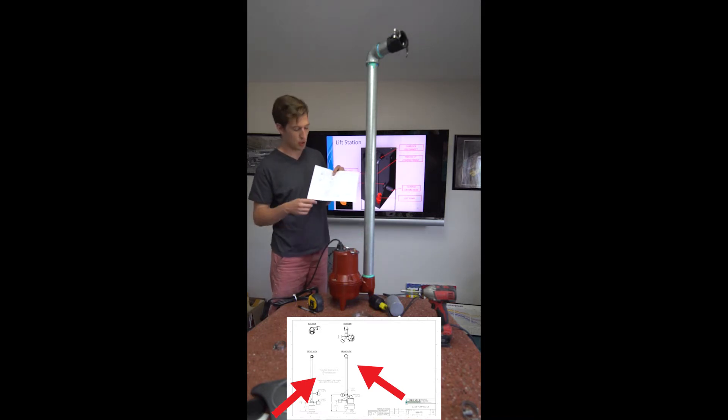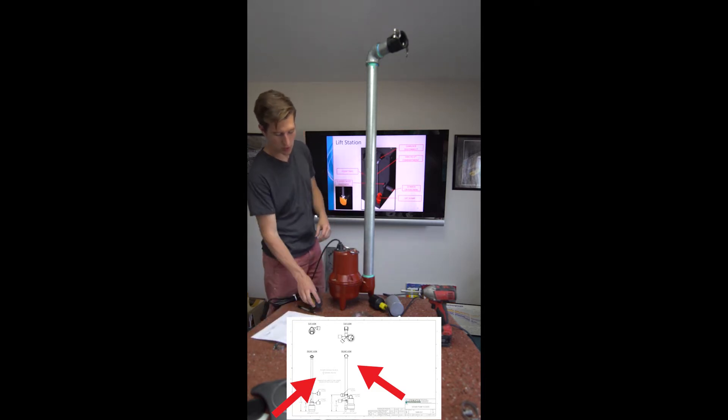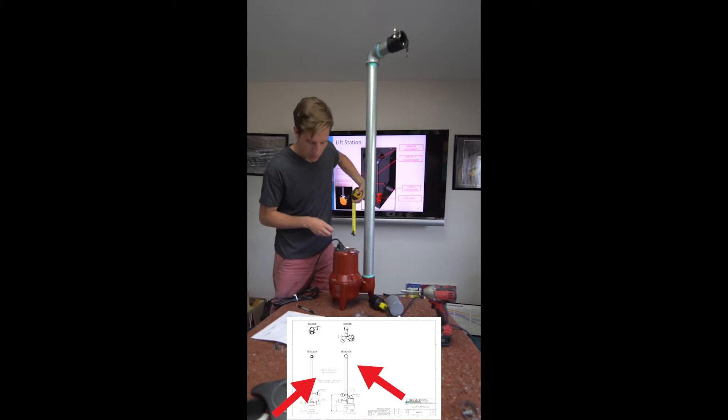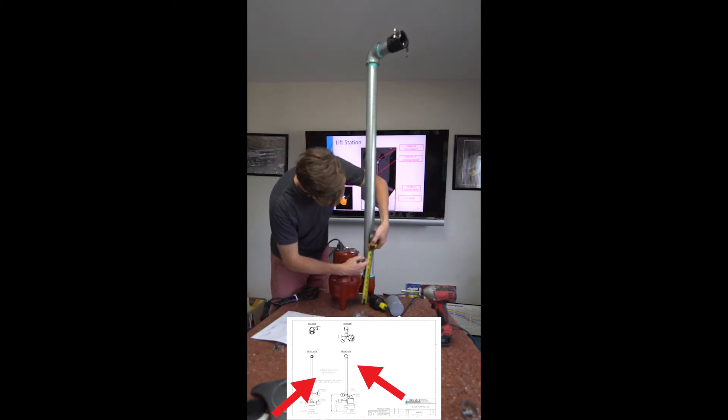First thing we want to do is make marks where our pump floats are going to be. It is important to measure from the bottom of the pump. So I'm going to take my tape measure. First one is at 10 and a half inches. Measure from the bottom. 10 and a half. Make a line.